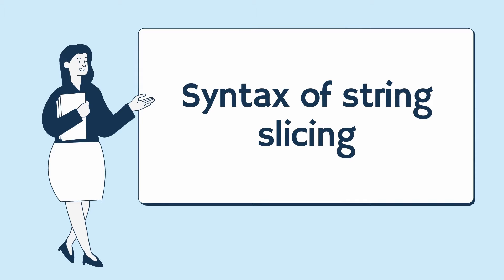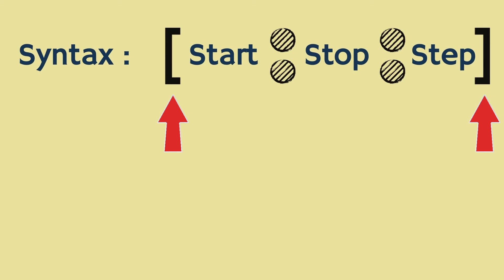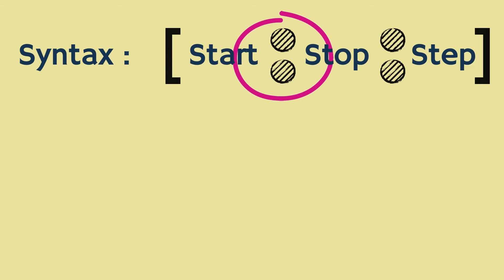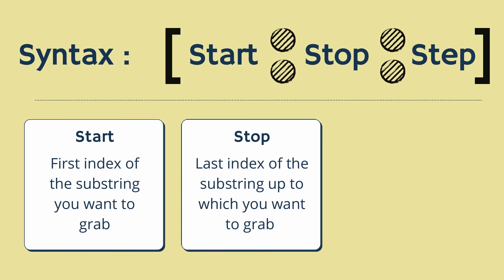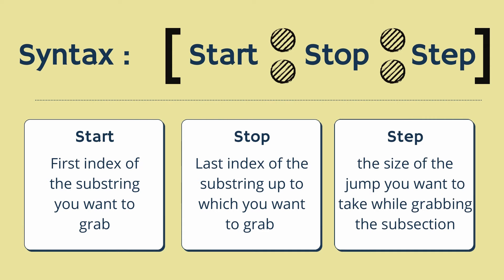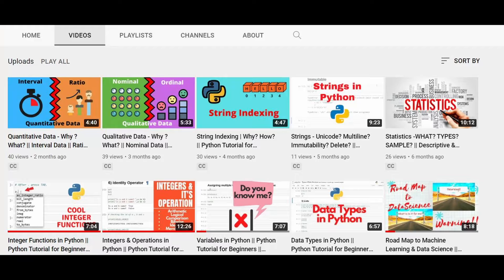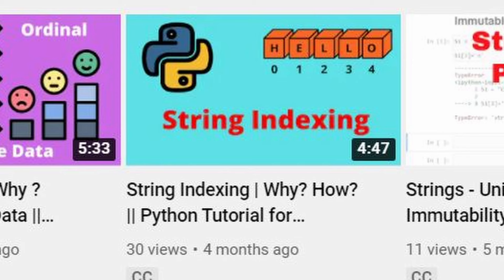The slicing syntax has three numeric values in it, each separated by colons and surrounded by square brackets. The first part of the syntax is the start, which is the first index of the substring you want to grab. Then comes a colon which is followed by stop — the stop is the last index up to which you want to grab your substring, but remember the last index will not be included in the substring. This is again followed by a colon and then the step size, which is the size of the jump you want to take while grabbing the subsection from the string. We have covered string indexing in detail in one of our videos; if you are interested, the link is in the description box.